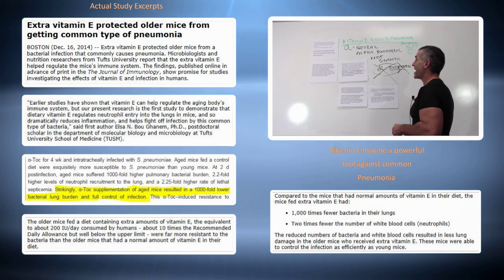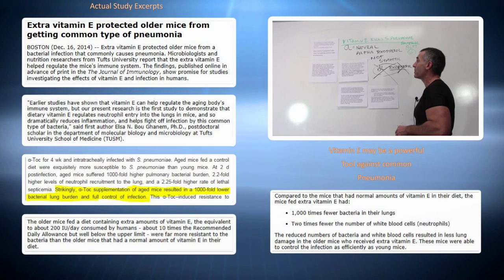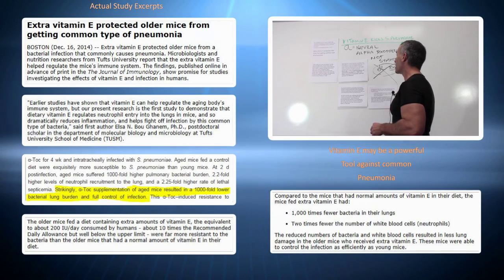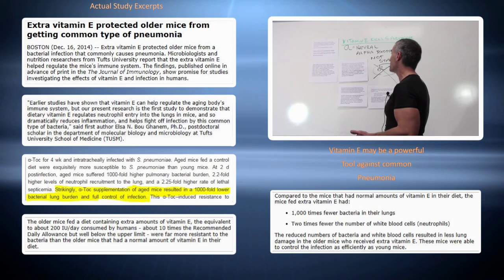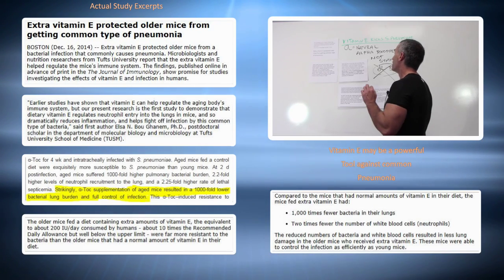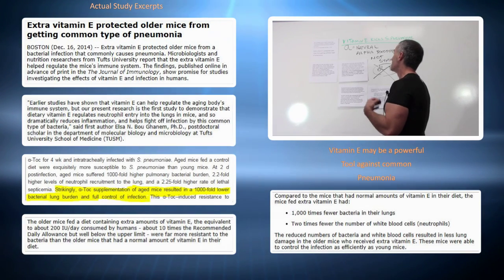At two days post-infection, aged mice suffered 1,000 times higher pulmonary bacterial burden, 2.2-fold higher levels of neutrophil recruitment to the lungs, and a 2.25-fold higher rate of lethal septicemia.